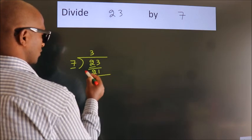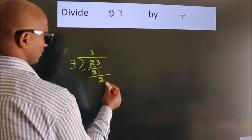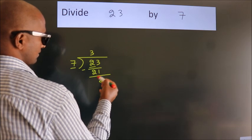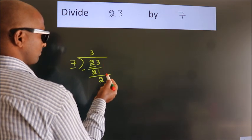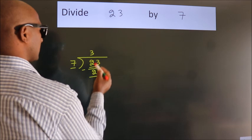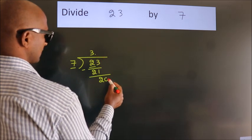Now we should subtract. We get 2. After this, no more numbers to bring it down. So what we do is put a dot and take 0.